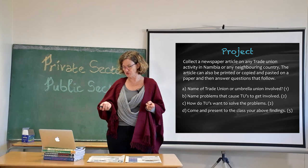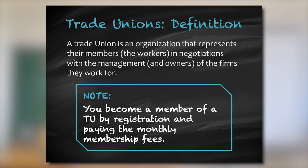We look at the definition of trade unions. A trade union is an organization that represents its members in negotiations with management. There will be negotiations between the trade union, which acts on behalf of its members, and the management or the owners. Three marks are normally allocated for that definition.